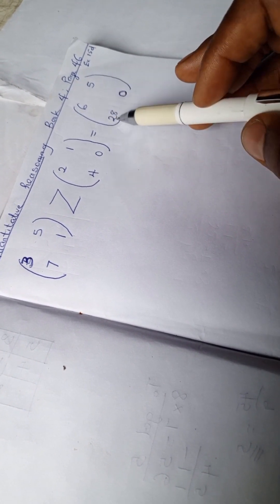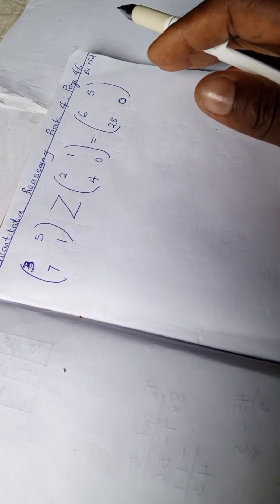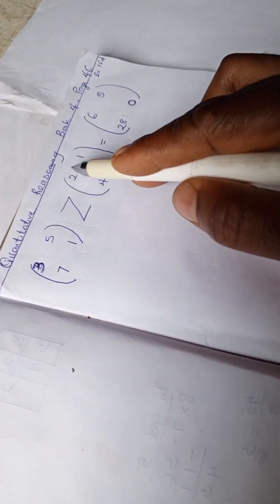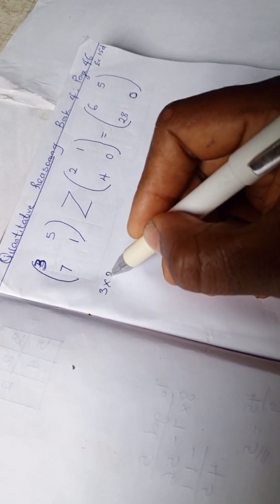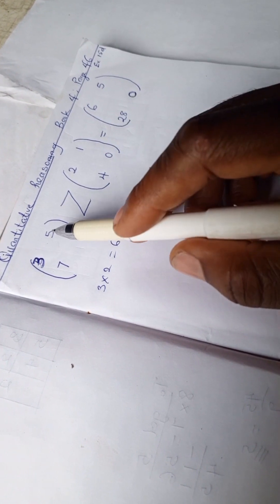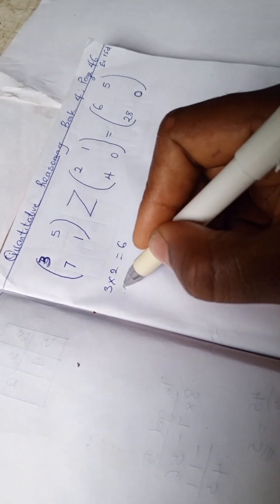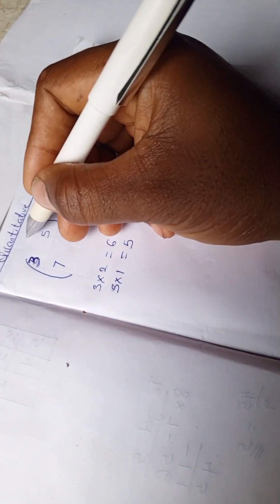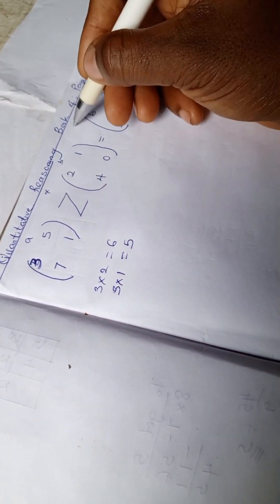Here we have 6, 5, 28, and 0. This is like a 2x2 matrix, so we're going to solve: 3 times 2 is 6, 5 times 1 is 5. It's like A times B equals C.